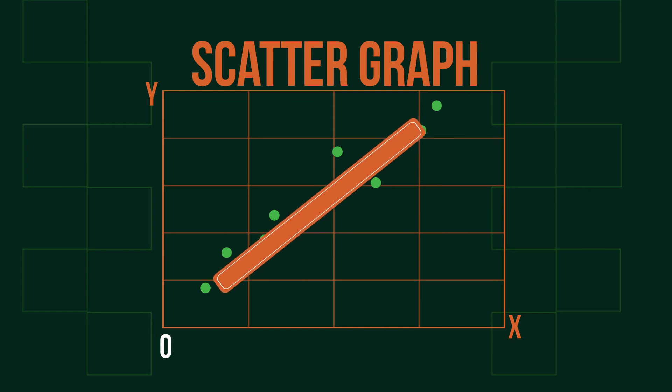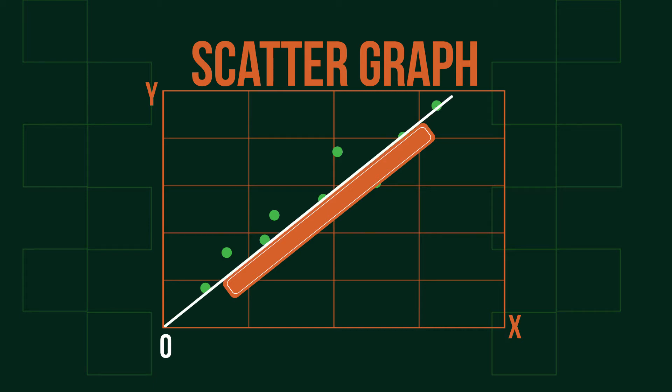Then, taking a ruler, place it so that there are more or less an equal number of points above and below the line. Then, draw the line out. This, of course, will be a very rough estimation.